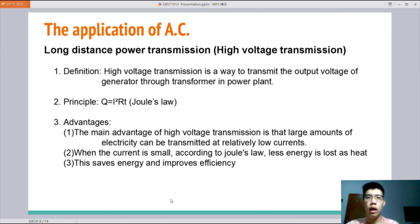High-voltage transmission is a way to transmit the output voltage of generator through transformer in power plant. The reason why we chose this method to transport AC but not DC is Joule's law, which can be expressed as Q equals I squared times R times T. That is, if you use a high voltage, the current could be small, which leads to a small amount of Q, which means that a small amount of electrical energy is lost in the form of heat. The advantage of this method is apparent. That is, save energy and improve efficiency. This is the end of my part. The next part is going to talk about the future development of DC and AC.